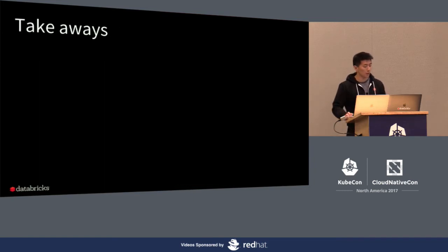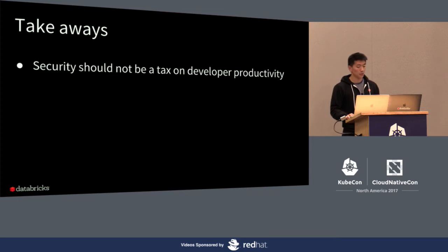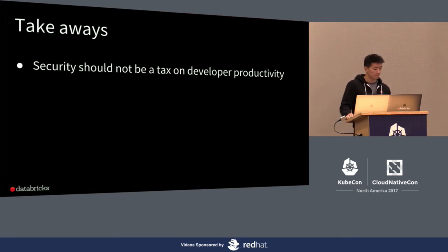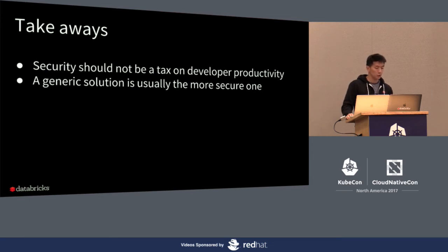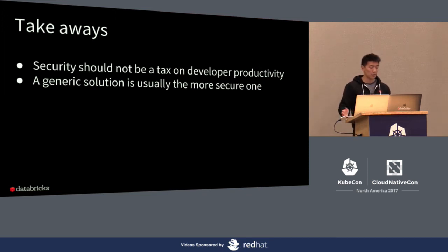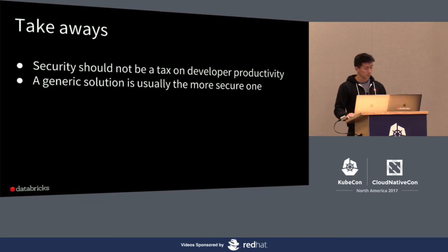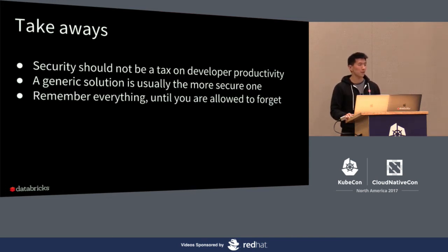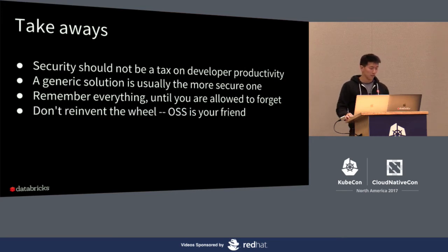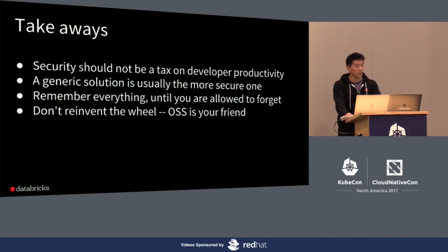To wrap things up, here are the key lessons we learned when building these security systems. First, security shouldn't be a tax on developer productivity — the easy way should be the secure way, and gnarly security implementation details should be hidden by automation. Second, a generic solution is usually the more secure one — TLS was easy to adopt and is a common enough standard for both Kubernetes and other application use cases. Third, for security compliance, remember everything until you're allowed to forget. And lastly, don't reinvent the wheel — open source software is your friend. Take advantage of battle-tested solutions and you'll be a lot happier.